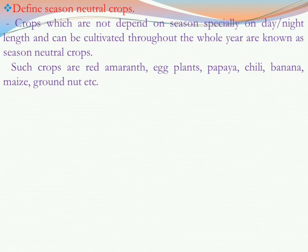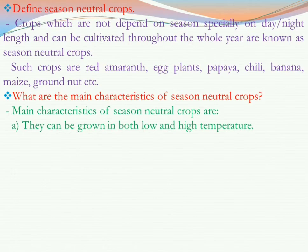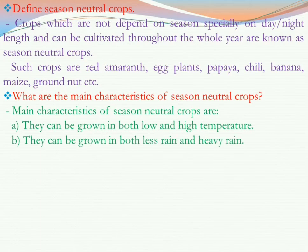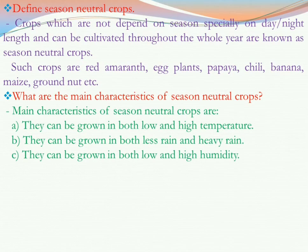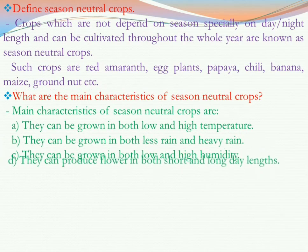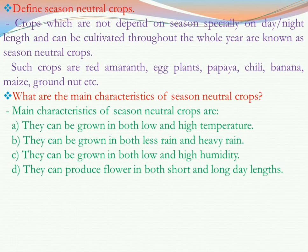Season neutral crops have specific characteristics. They can be grown in both low and high temperature — they do not depend on temperature level. They can grow in both less rain and heavy rain. They can grow in both low and high humidity. And importantly, whatever the day length or night length, they do not depend on photoperiod. These are the main characteristics of season neutral crops.